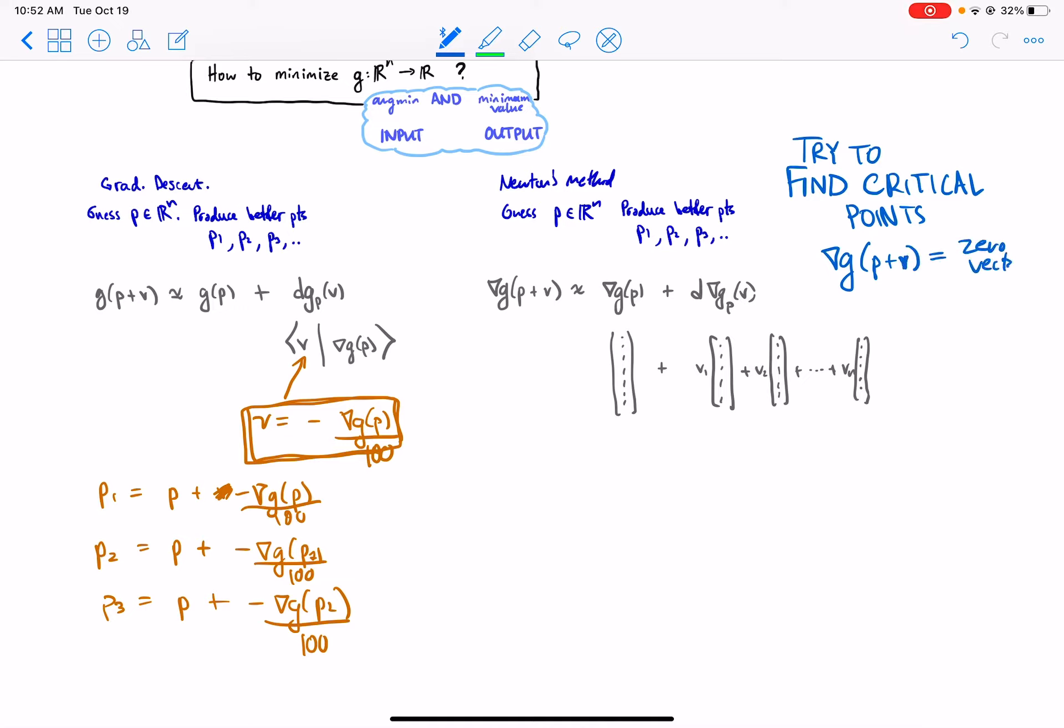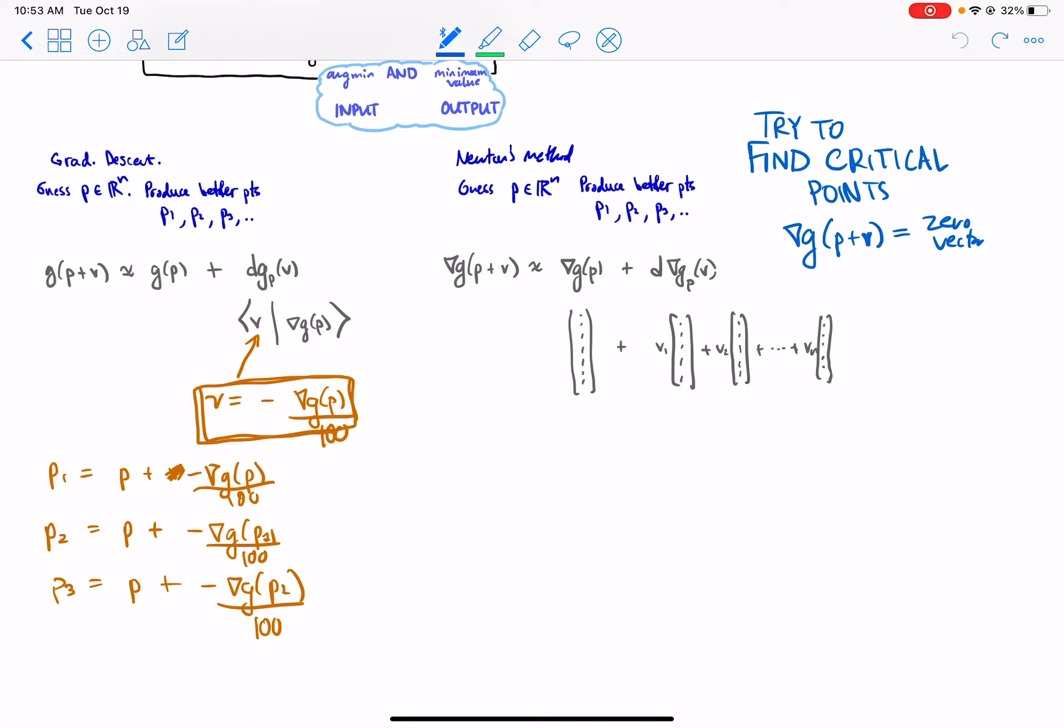And what that means is that we'd like to find a V such that this is the zero vector. Over here we just knew what V was—we just choose V to be negative the gradient and scale it down so it's a little shorter. But here we have to solve for V. V is unknown.